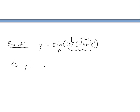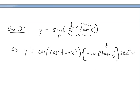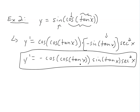So y prime equals the derivative of the outside function, which gives cosine of cos of tan of x. Now we multiply by the derivative of the first inner function, cos of tan of x, which is negative sine of tan of x. Then we take the derivative of the innermost function, tan of x, which is secant squared of x. So putting the negative in front, y prime equals negative cosine of tan of x, times sine of tan of x, times secant squared of x. That's our derivative.